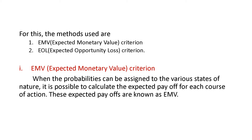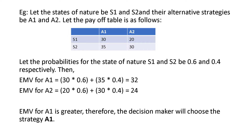It is possible to calculate the expected payoff for each course of action by multiplying probability by the payoff value. Here is the problem for EMV. Let the states of nature be S1 and S2, and alternatives A1 and A2. The payoff table values are 30, 20, 35, and 30. Probabilities are 0.6 for S1 and 0.4 for S2.